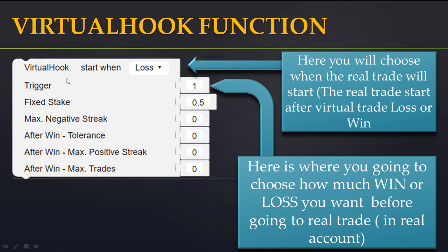Let me explain the Visual Hawk functions one by one. The first one says 'Start When.' You use it to choose if you want the bot to go to real trading after a win or after a loss. If you click here, you can choose — for example, after a win or after a loss — then it jumps to a real account. You decide here when the real trade will start after the visual demo trade.